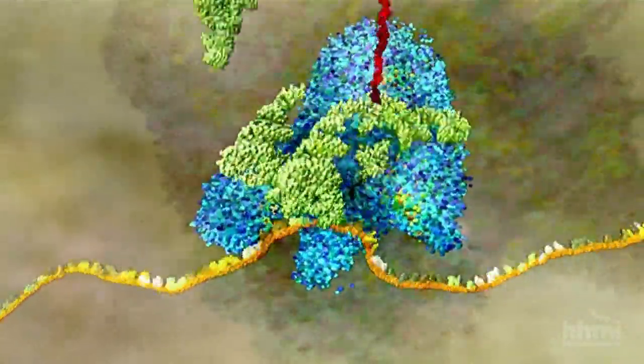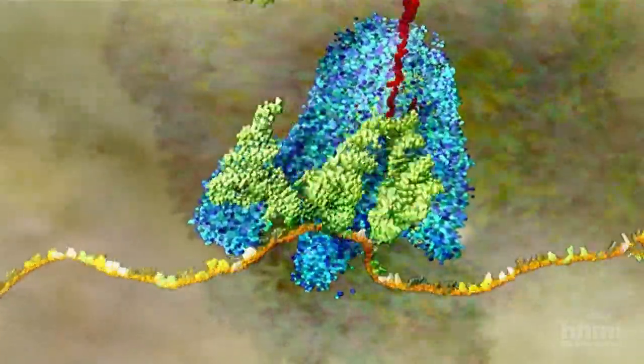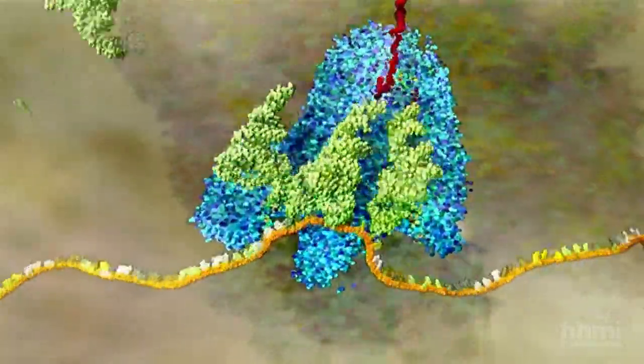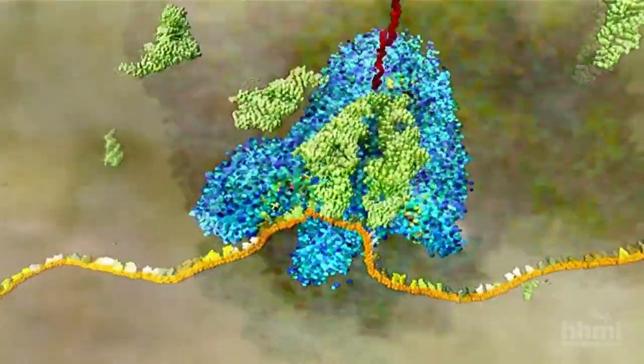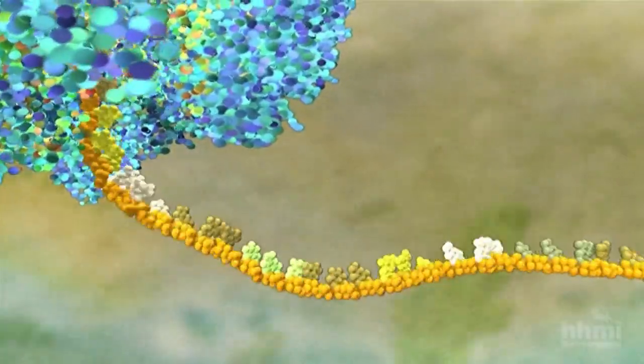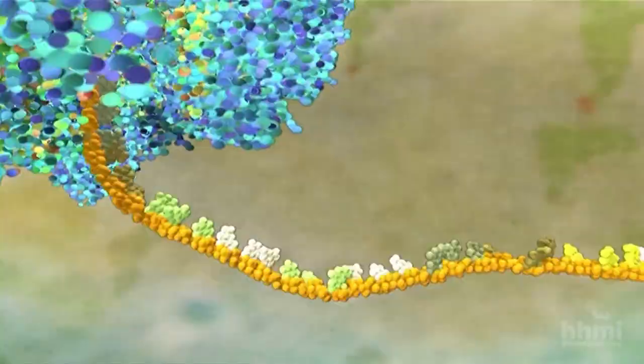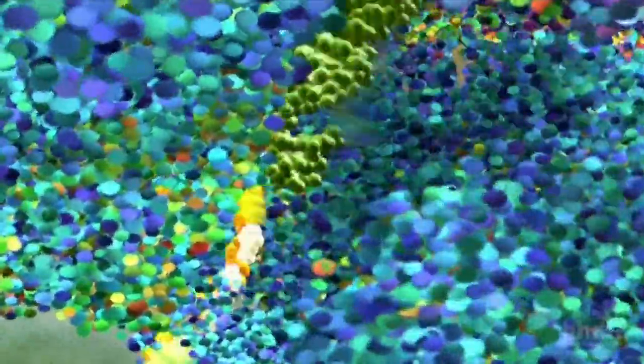The small subunit of the ribosome positions the mRNA so that it can be read in groups of three letters known as a codon. Each codon on the mRNA matches a corresponding anticodon on the base of a transfer RNA molecule.